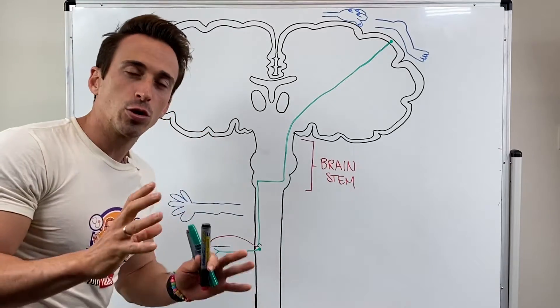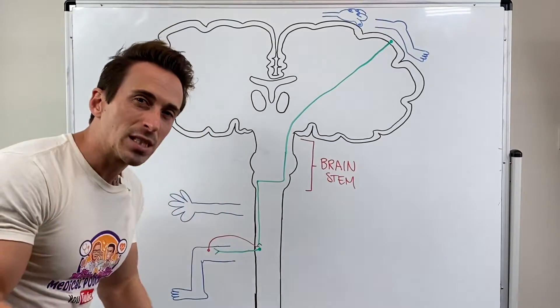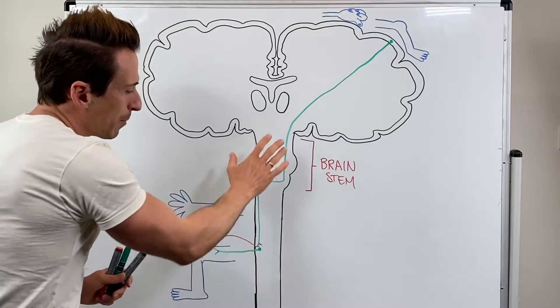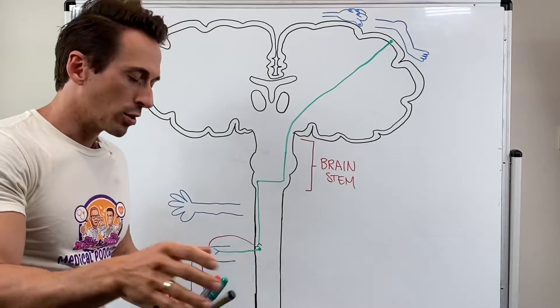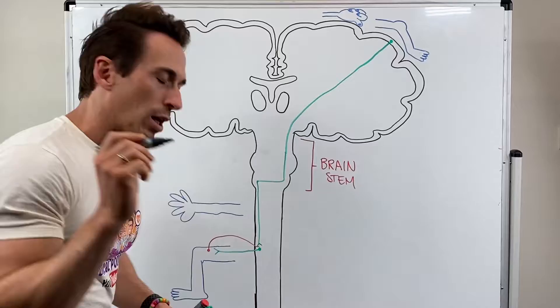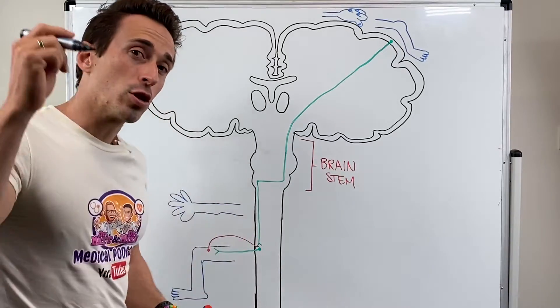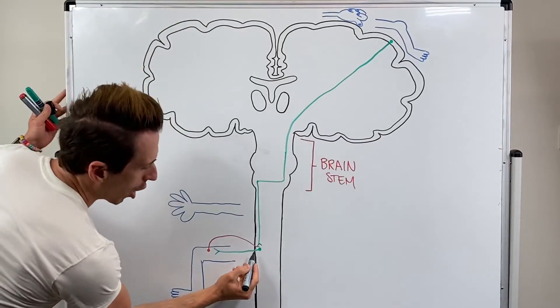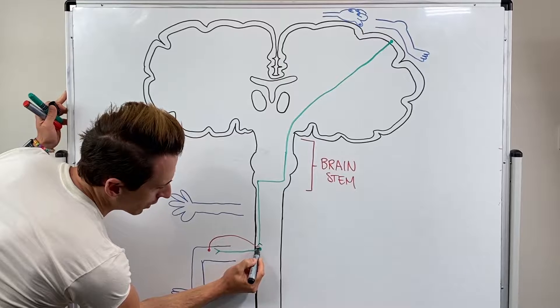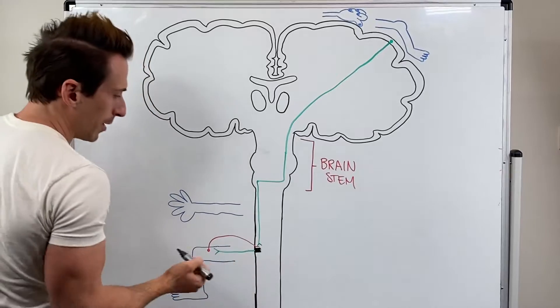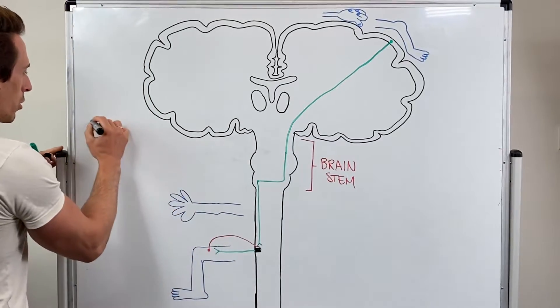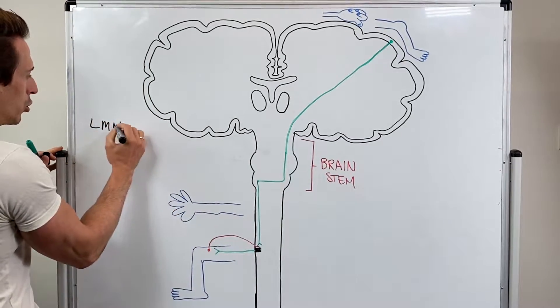Now if we've got damage to the spinal cord, to specific motor neurons, now it may be upper or lower, what you're going to find is that they present differently. So let's first demonstrate what would happen if there's damage to the lower motor neuron. So there's going to be a level of injury here that's damaged, right here. Now what we're going to find, the lower motor neuron.